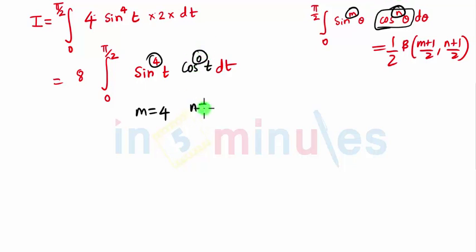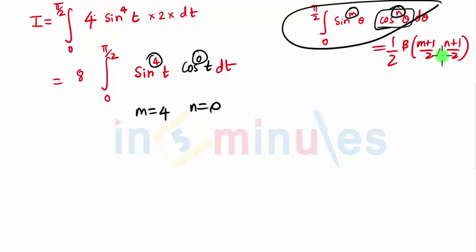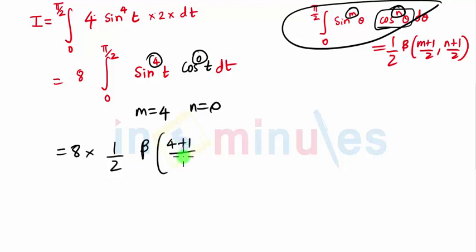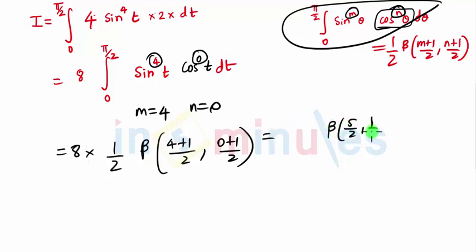Comparing the two equations, we get m equal to 4 and n equal to 0. So this term is nothing but half of Beta(m+1/2, n+1/2), which gives us half of Beta(5/2, 1/2). Two ones are 2 and two fours are 8, so here we have 4.